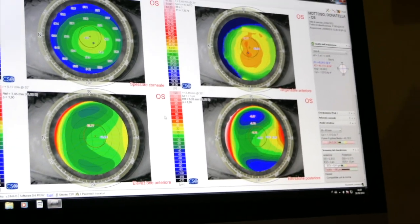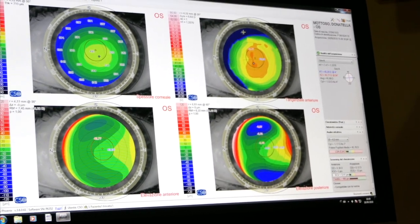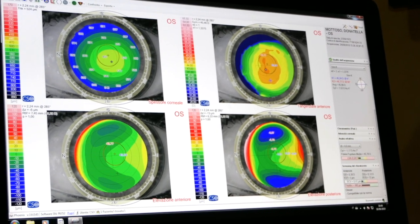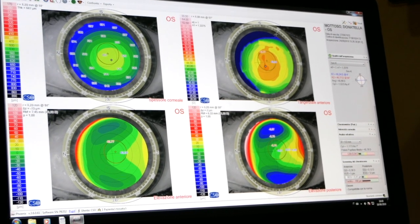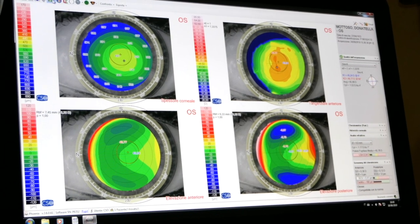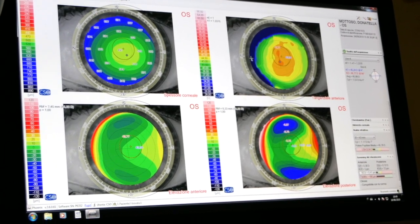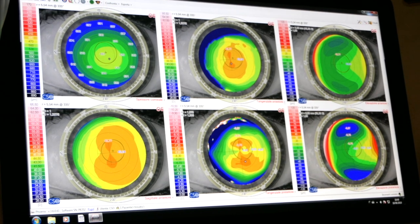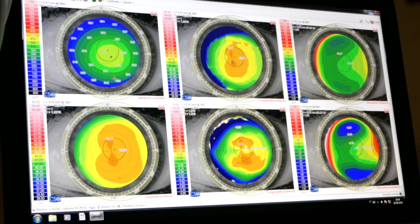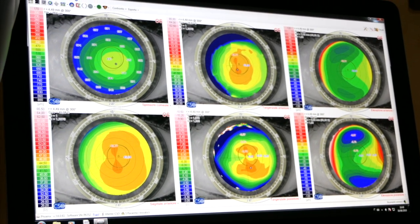Usually, the corneal topography is used with six maps in which the anterior and posterior surfaces of the cornea are represented: corneal thickness, anterior tangent, anterior sagittal, posterior, anterior and posterior refractive elevation, and the space of the anterior chamber.